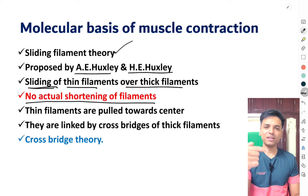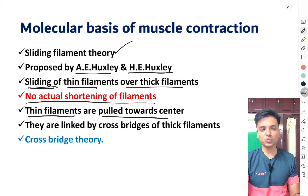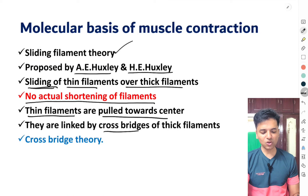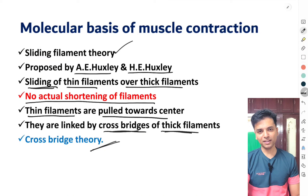One filament is sliding over another. The thin filaments are pulled towards the center of the sarcomere by structures called cross bridges, which belong to the thick filaments or myosin. That is why this is also called the cross bridge theory. Whether asked as cross bridge theory, sliding filament theory, or molecular basis of skeletal muscle contraction — they all refer to the same thing.